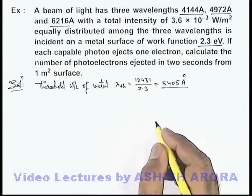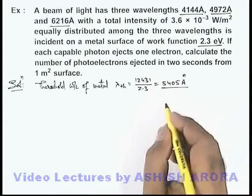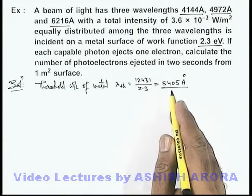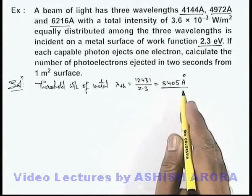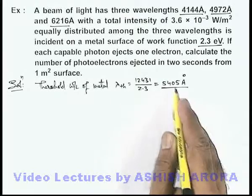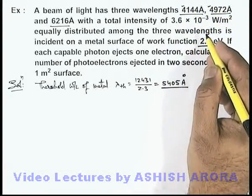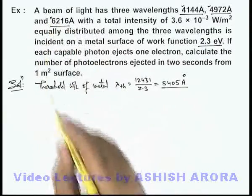We know that only those wavelengths which are less than the threshold wavelength are capable of ejecting electrons in the photoelectric effect. Here we can see that the first and second wavelengths will eject photoelectrons, whereas the third one will not.